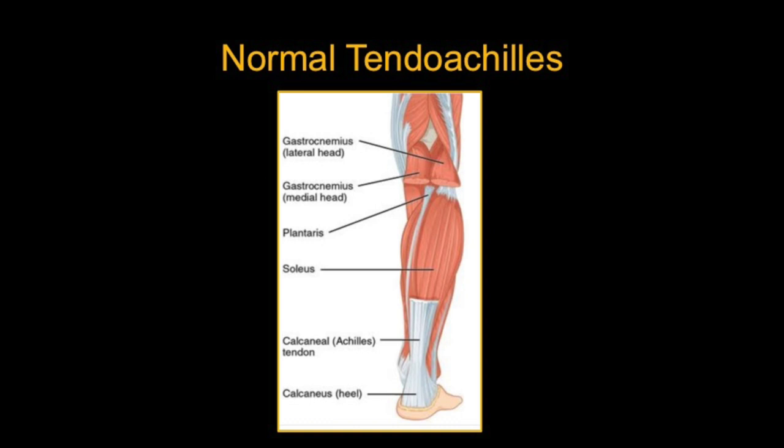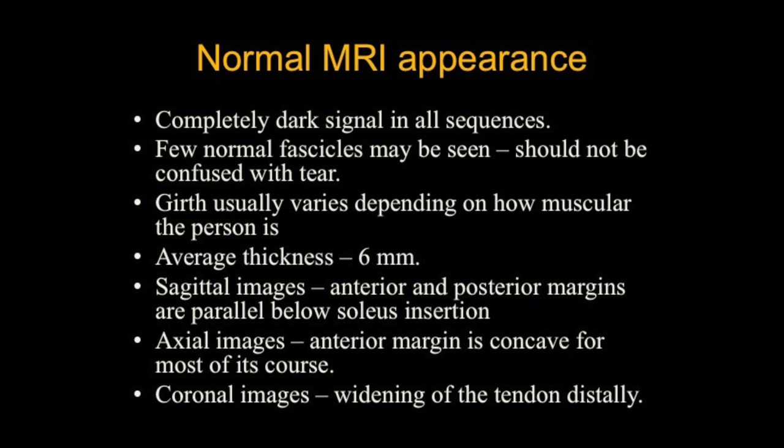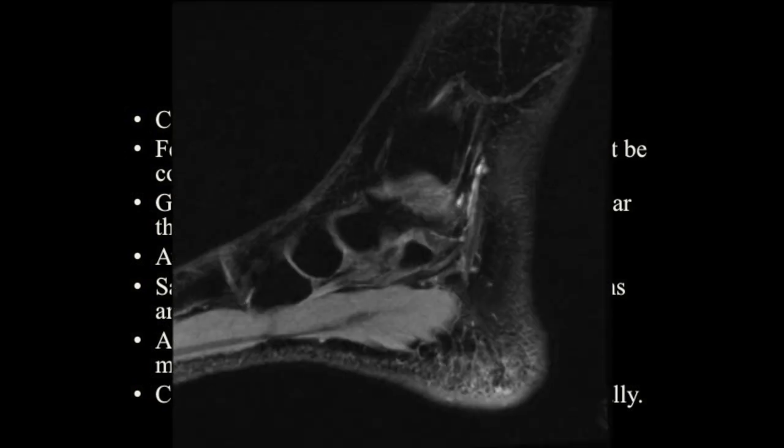Coming to the normal MRI appearance: the Achilles tendon is completely dark in all sequences. A few normal fascicles may be seen, which is part of the normal appearance and should not be confused with a tear — I'll show pictures later. The girth usually varies depending on how muscular the person is; average thickness is 6 millimeters, and tall, well-built athletes will have a bigger girth.